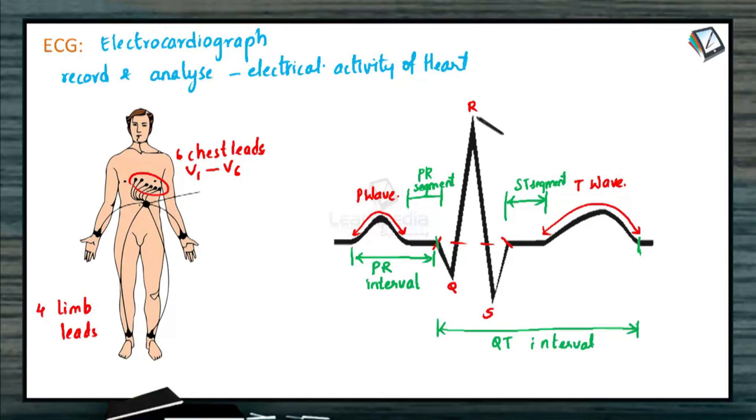And the RR interval, that is from this point till the next R wave, is the duration of one cardiac cycle. This is how the ECG is recorded in a normal individual.